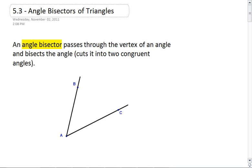Remember, an angle bisector is something we've seen before. It is a line or ray that will pass through the vertex of an angle and bisects that angle, or cuts that angle into two congruent angles.